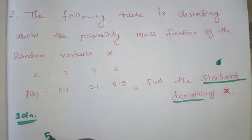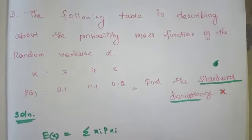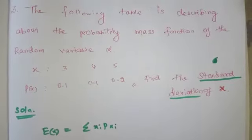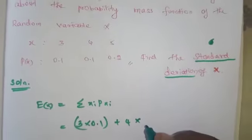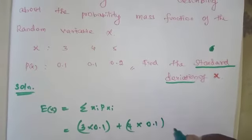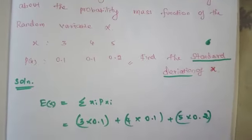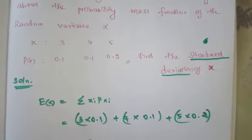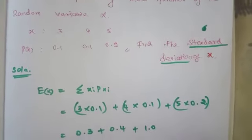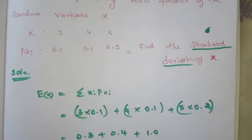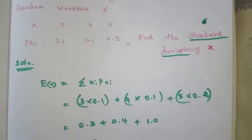First, find E(x) using the formula: summation of xi times p(xi). So 3 times 0.1 gives 0.3, plus 4 times 0.1 gives 0.4, plus 5 times 0.2 gives 1.0. Total: E(x) = 1.7.